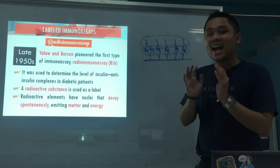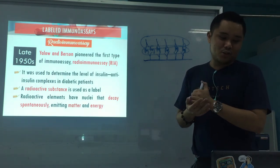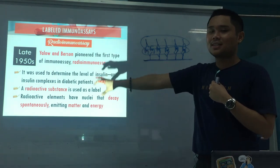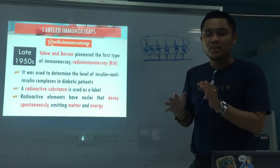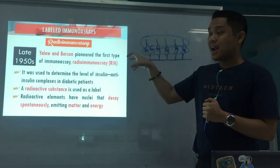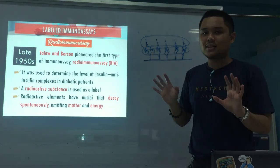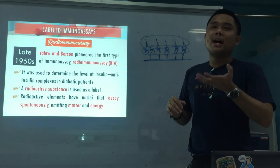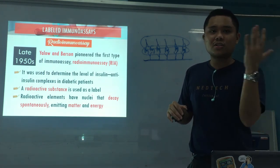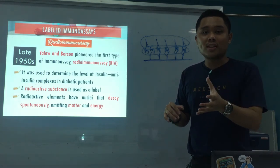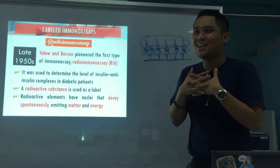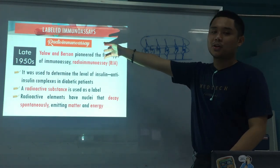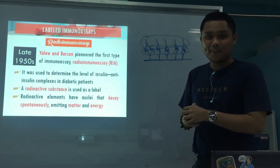In the next video — since I'm running low on memory — we'll start now with the first type of immunoassay based on labels, and that's radioimmunoassay. These types of immunoassays have been mentioned in your different subjects from first year to now, and we're going to have an in-depth discussion of these different types. I'll see you in the next video, starting with radioimmunoassay.